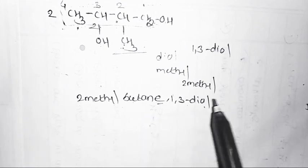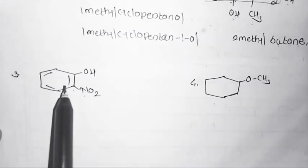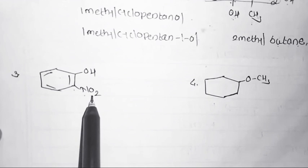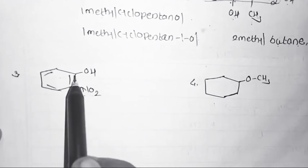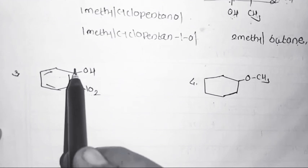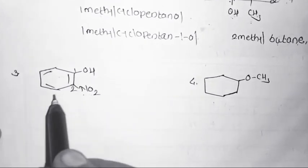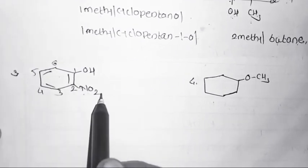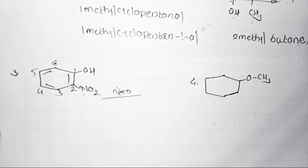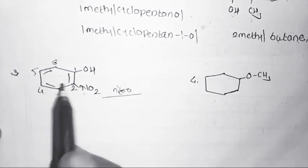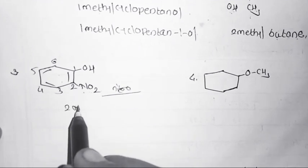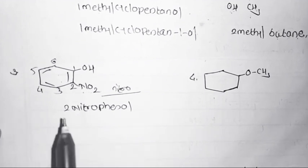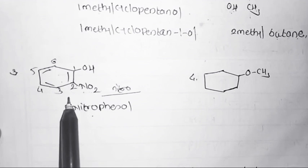Third structural formula is a benzene ring with two functional groups: OH and NO2. The OH group is always numbered as position 1 (first carbon). Numbering: 1, 2, 3, 4, 5, 6 — the NO2 group is at position 2. NO2 means nitro group. The IUPAC name of this structural formula is 2-nitrophenol.